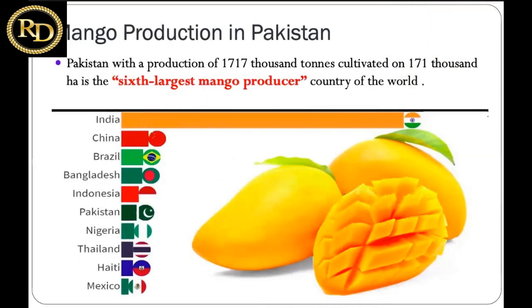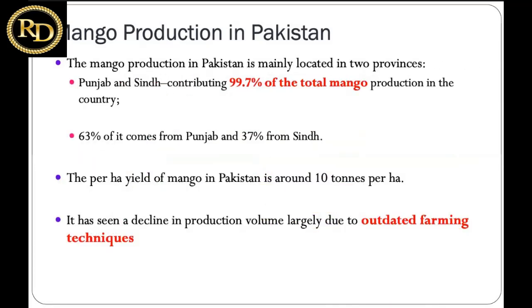Pakistan produces around 1.7 million tons of mango cultivated on 171,000 hectares, making it the sixth largest mango producer in the world. Mango production is mainly located in two provinces: Punjab and Sindh, accounting for around 99 percent of total mango production. Punjab contributes 63 percent while Sindh contributes the rest. However, per-hectare yield is around 10 tons per hectare, which is quite low compared to other developed countries. There has been a decline in production volume largely due to outdated farming techniques.